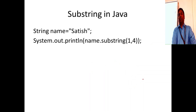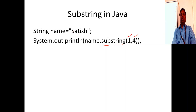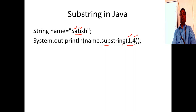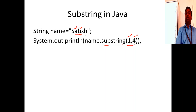For substring operations in Java, you use `.substring()` with a starting position and ending index. If you give `substring(1, 4)`, it starts from index 1 and goes up to but not including index 4. So for "Satish", it would return "ati". The character at the ending index is not included.